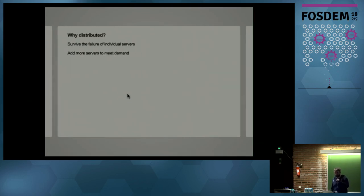So why distributed? Why do we need a distributed system? Well, first of all, we want to survive the failure of individual servers. So if an individual server dies, we want the system to keep working. And we also want to be able to add more servers to meet demand. So if we have lots of users sending metrics, we want to be able to scale up the number of servers to cope with that demand. So otherwise known as horizontal scaling.